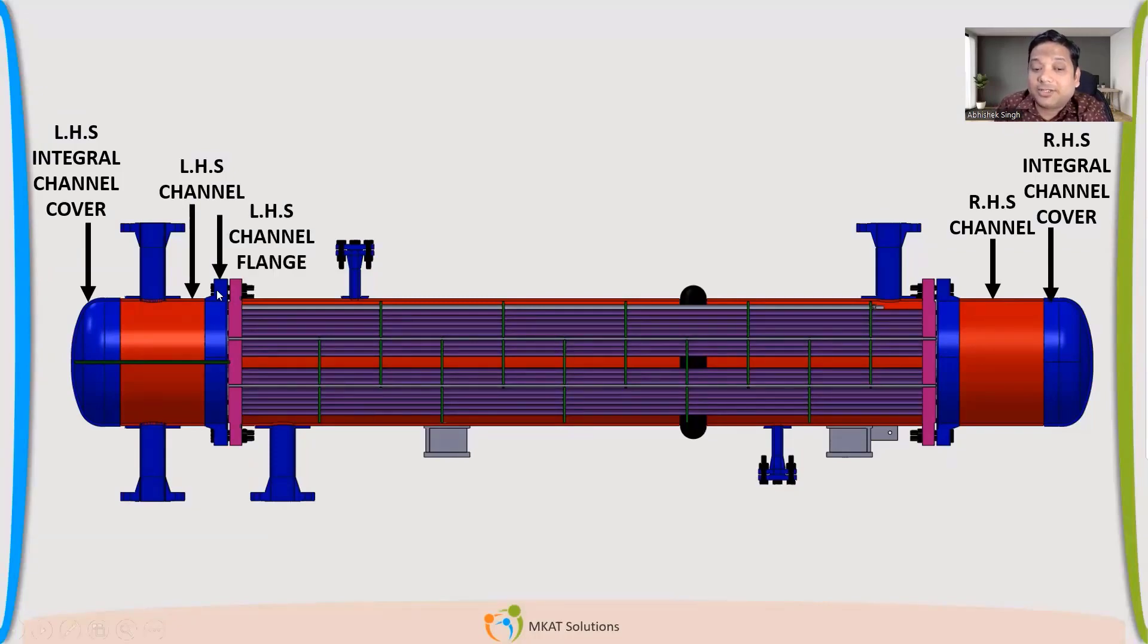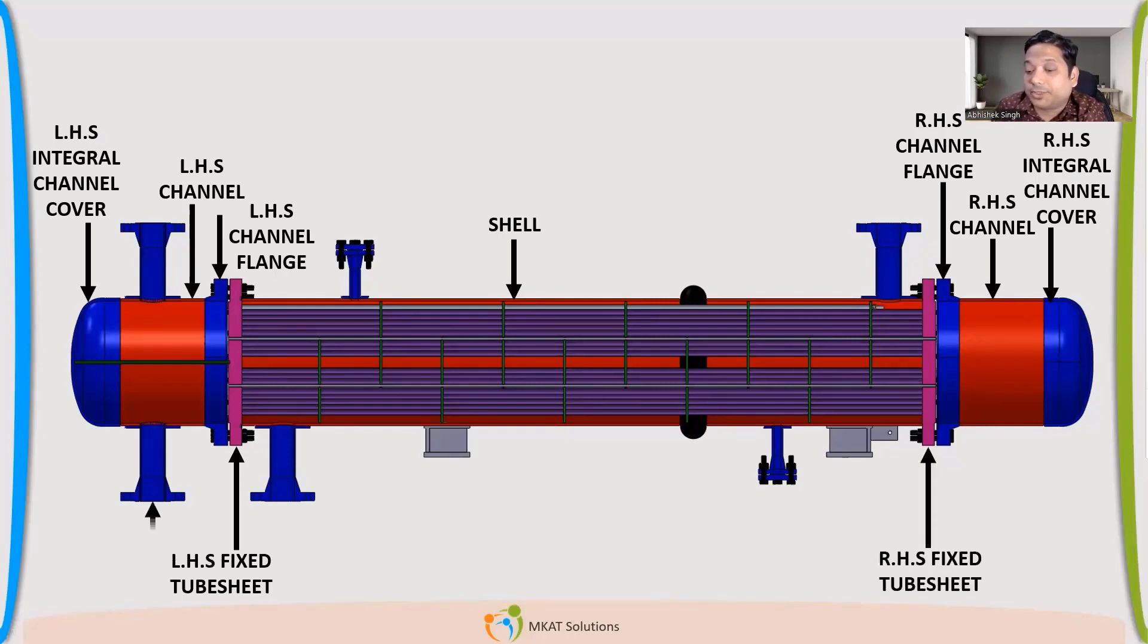Left hand side flange, which is a channel side flange. So left hand side channel flange. Opposite, it will be right hand side channel flange. In between, it's shell. Nozzle. Left hand side fixed tube sheet. Right hand side fixed tube sheet.